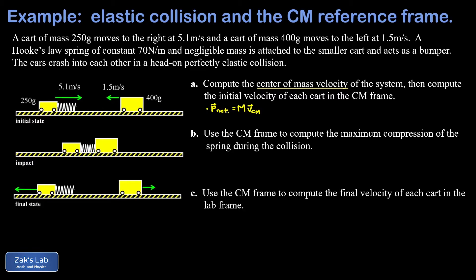We plug in the masses and velocities of the initially moving carts to get the net momentum, then solve for the center of mass velocity. The cart on the left is 250 grams (0.25 kg) moving at +5.1 m/s. The cart on the right is 400 grams (0.4 kg) moving at −1.5 m/s. The total mass is 0.65 kg, and solving gives a center of mass velocity of 1.038 m/s to the right.